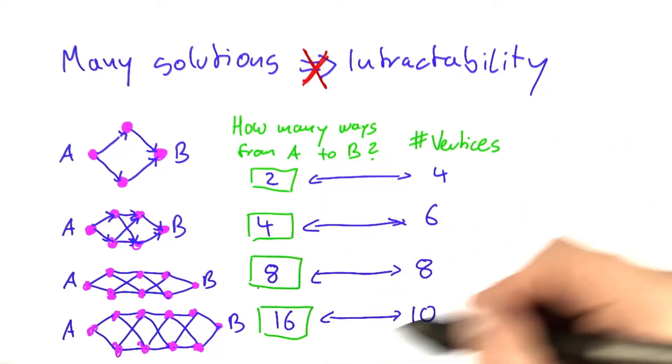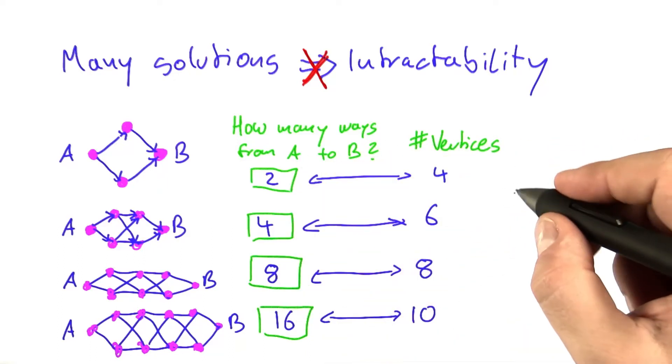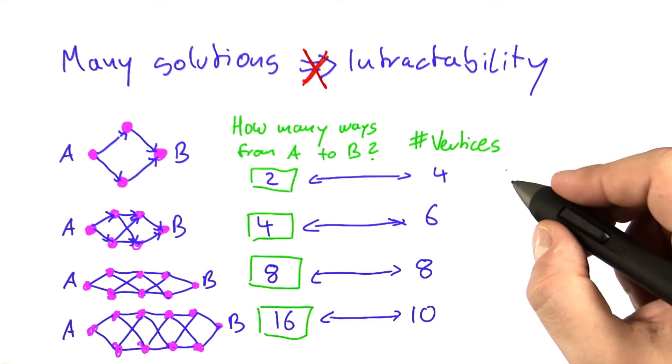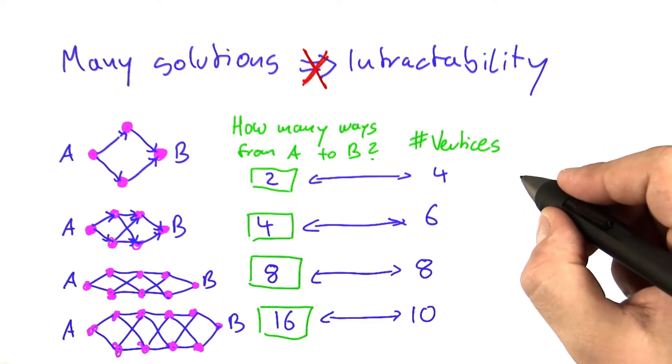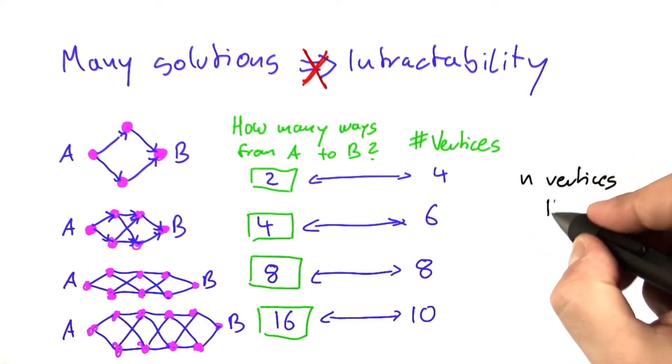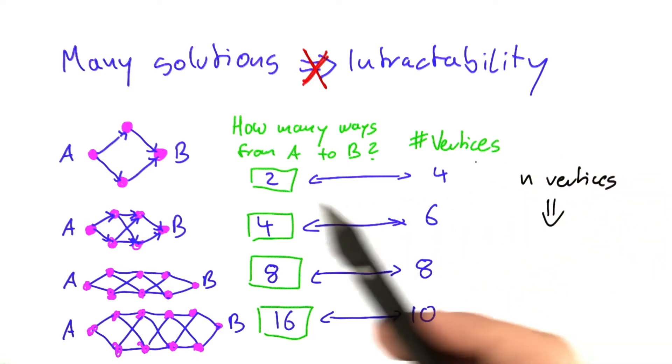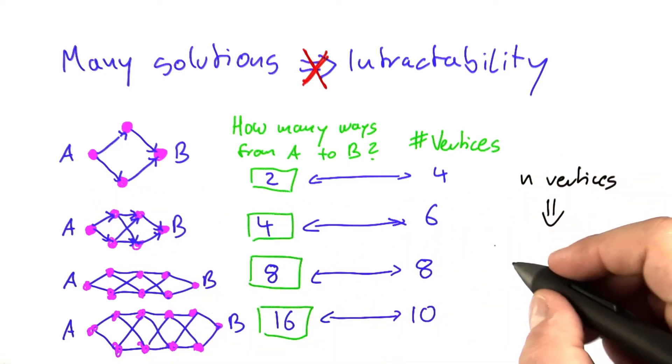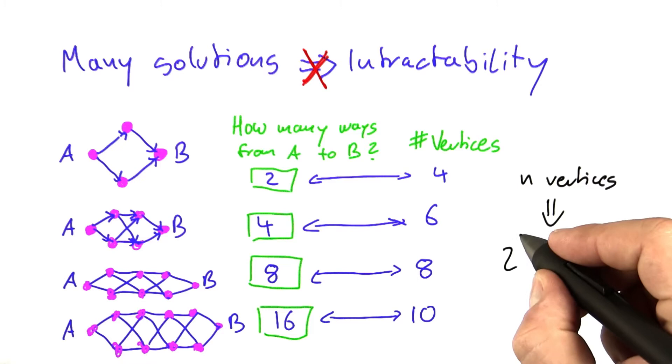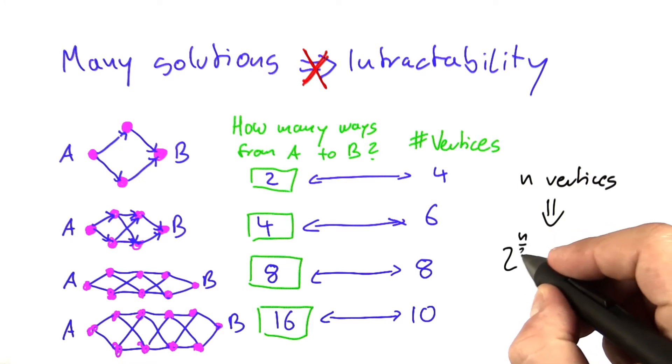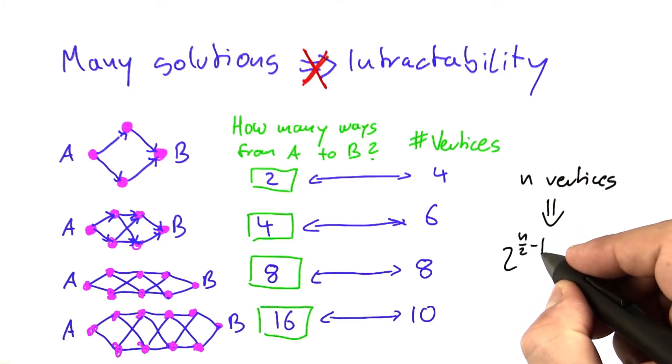If you play around with this a little bit further, you can figure out a general rule. The general rule is that if you have n vertices, then the number of different paths from A to B is 2 to the power of n/2 minus 1.